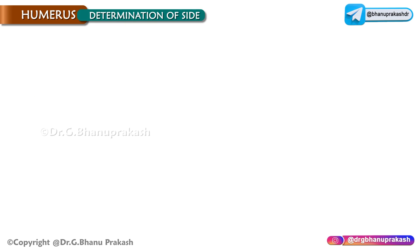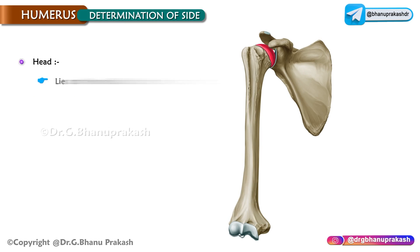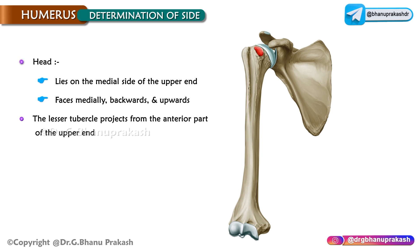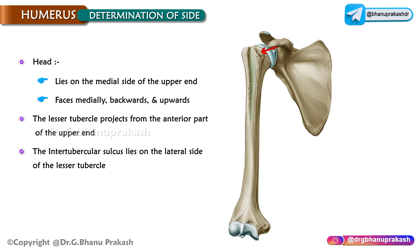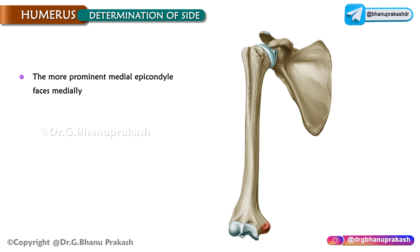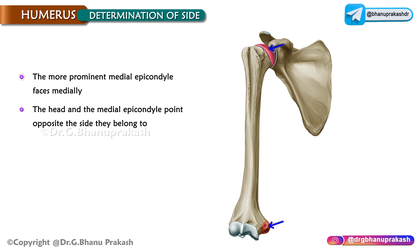Determination of side: The head lies on the medial side of the upper end and faces medially, backwards, and upwards. The lesser tubercle projects from the anterior part of the upper end. The intertubercular sulcus lies on the lateral side of the lesser tubercle. The olecranon process lies on the posterior side and the more prominent medial epicondyle faces medially. The head and the medial epicondyle point opposite to the side they belong to.